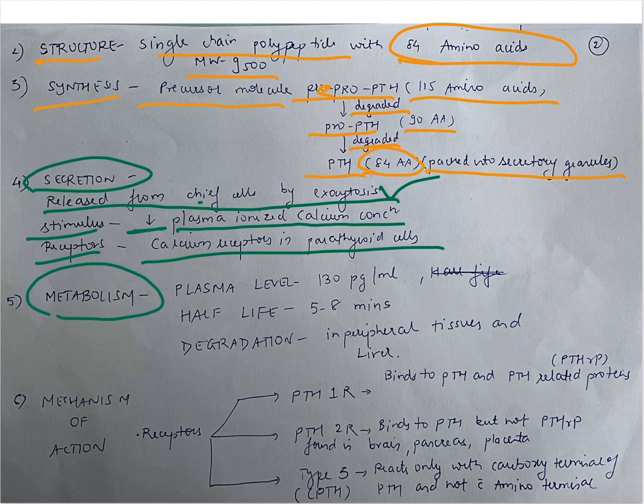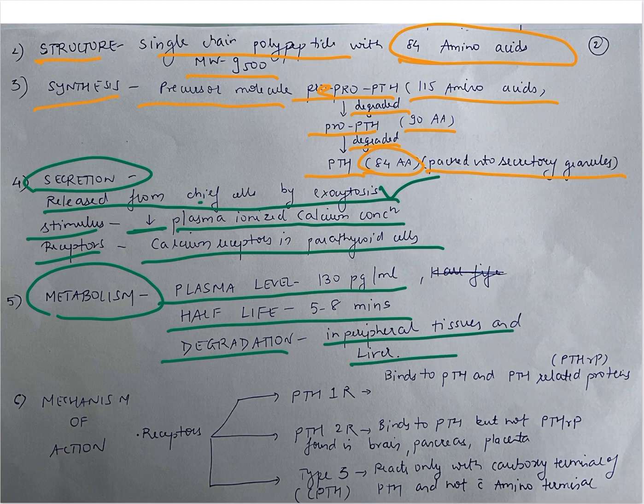Now let's see metabolism. Plasma levels are 130 pg per ml. The half-life is 5 to 8 minutes. Degradation occurs in peripheral tissues and in the liver.